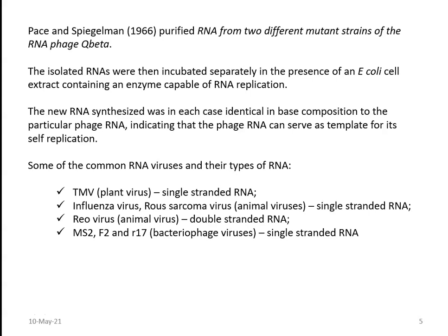Some common RNA viruses and their types of RNA are: tobacco mosaic virus, a plant virus made up of single-stranded RNA; influenza virus and Rous sarcoma virus, commonly present in animals, made up of single-stranded RNA; coronavirus also falls under single-stranded RNA viruses; reoviruses, an animal virus made up of double-stranded RNA; and MS2, F2, R17 — bacteriophage-related viruses that affect bacteria — all found to have single-stranded RNA as their genetic material.